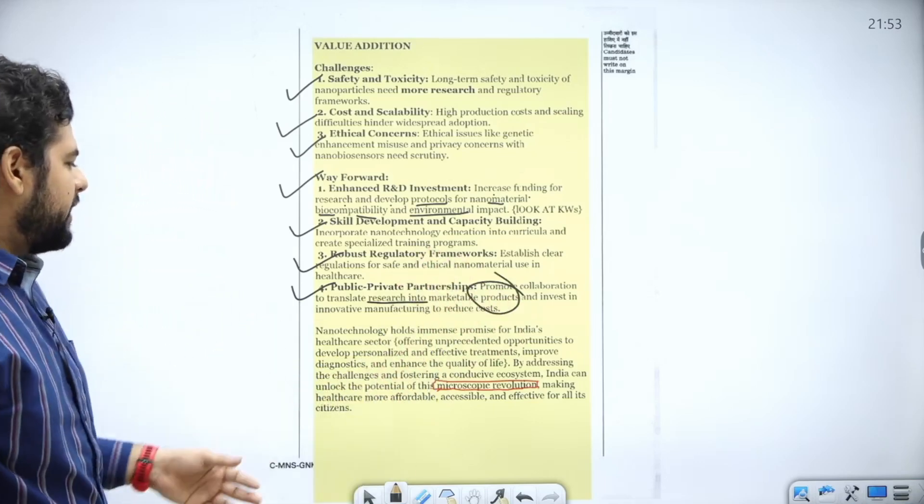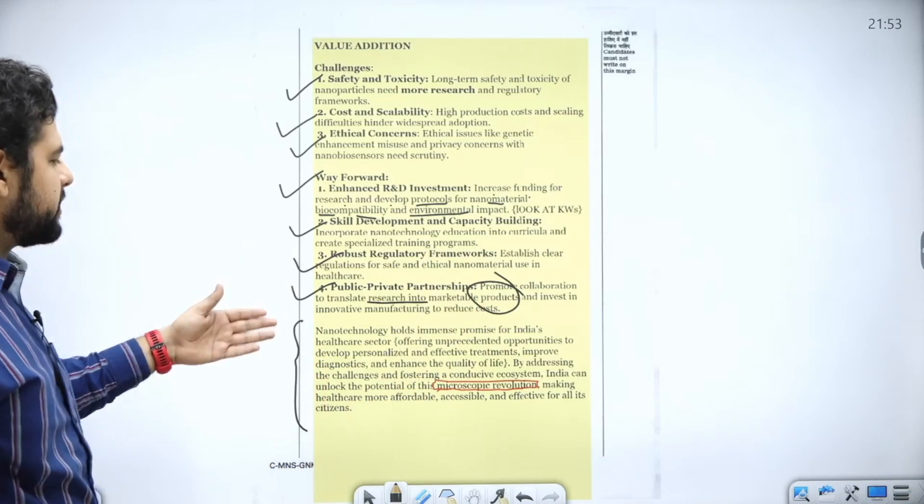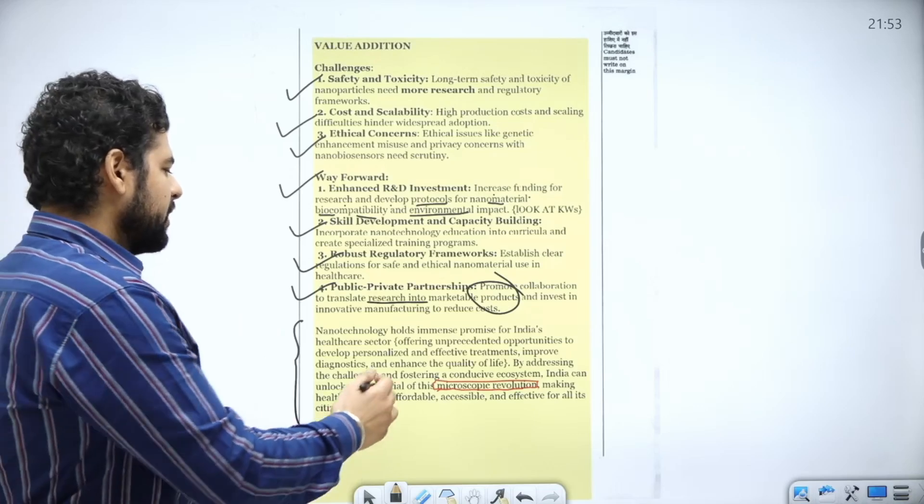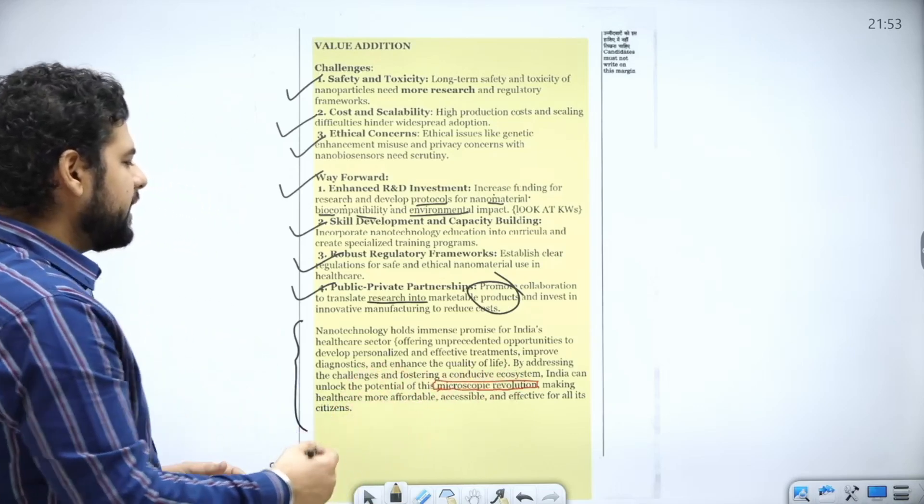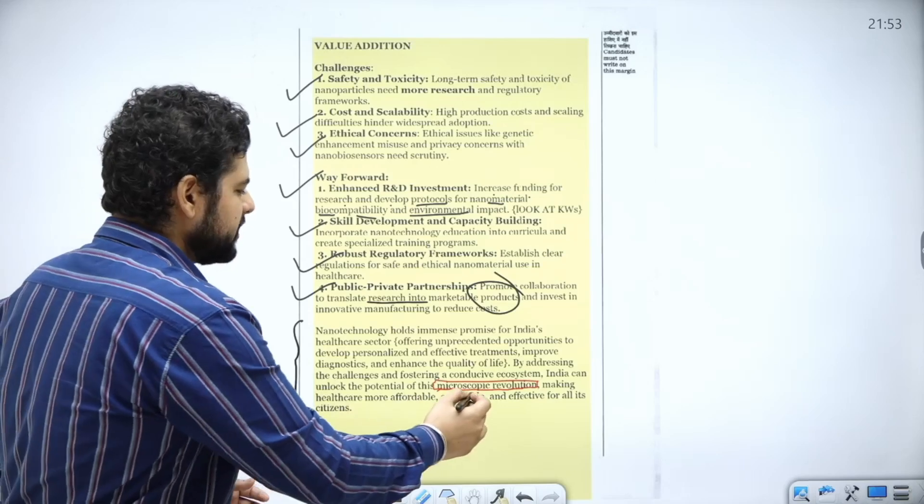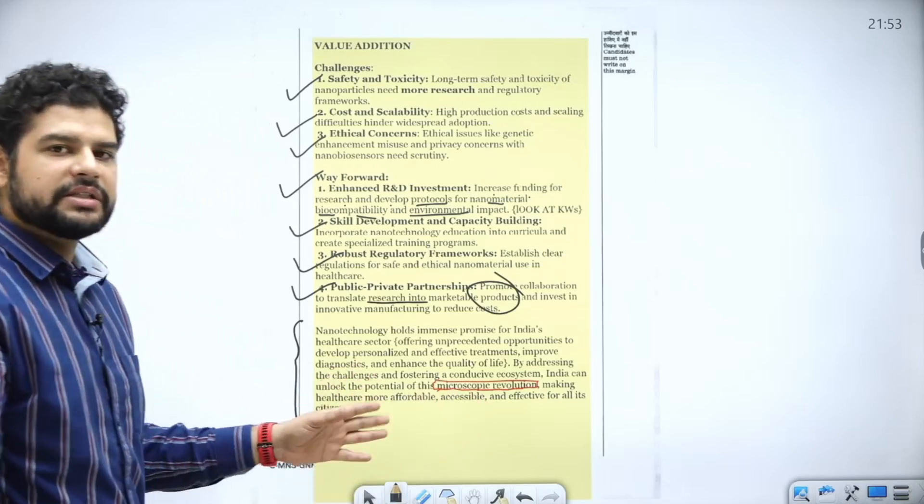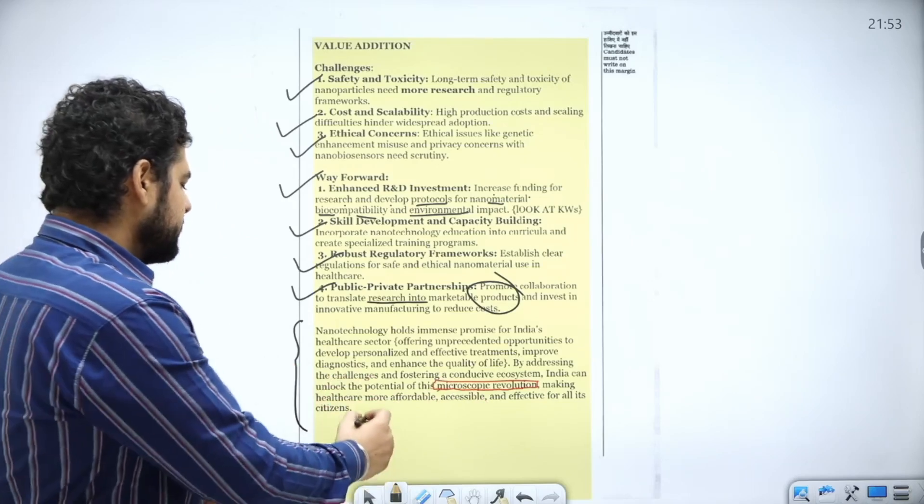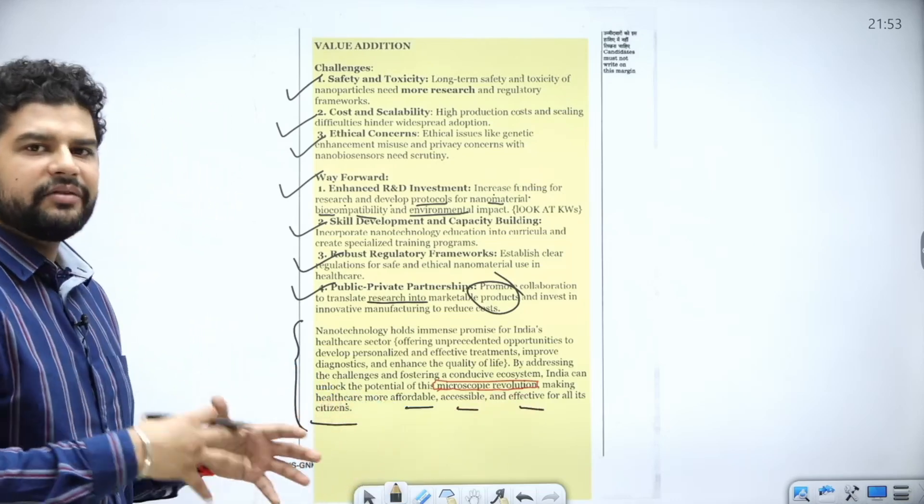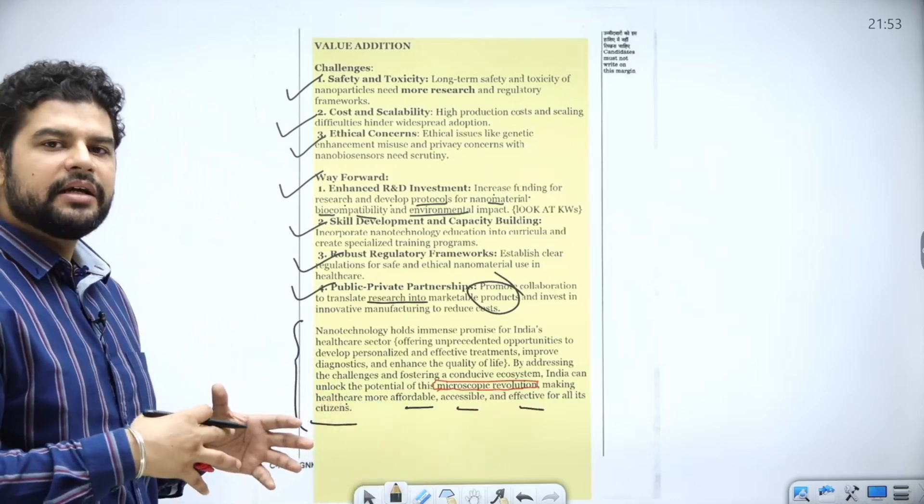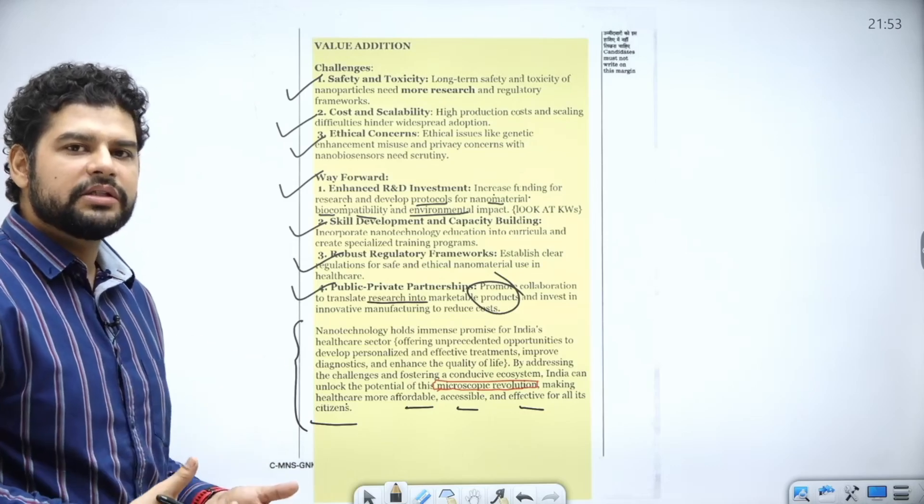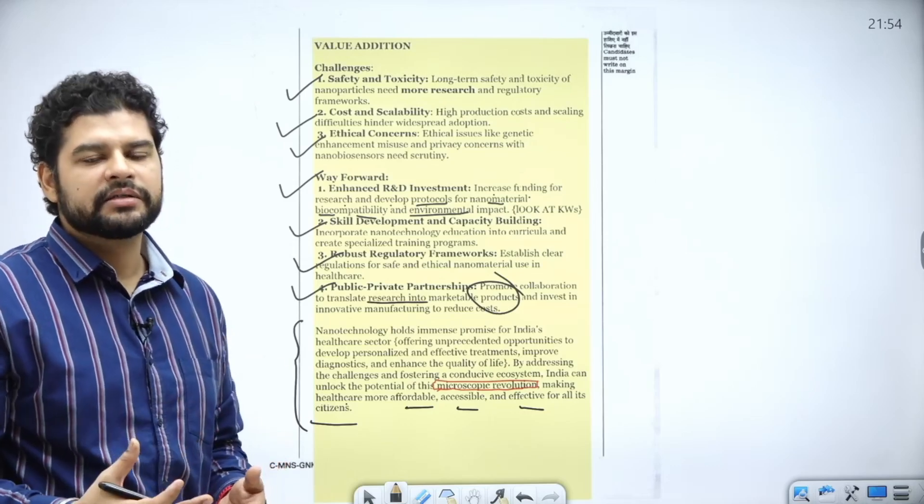I have changed the conclusion depending on these points. Nanotechnology has immense potential for India's health sector, and by addressing the challenges and fostering a conducive ecosystem, India can unlock the potential of this microscopic revolution. This is a keyword you can use. Make healthcare more affordable, accessible, and effective for all its citizens. Connect with people, write about citizens rather than just technology.